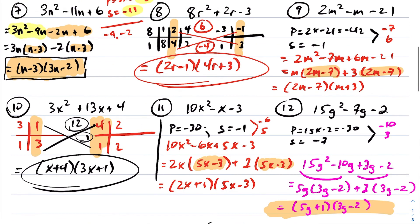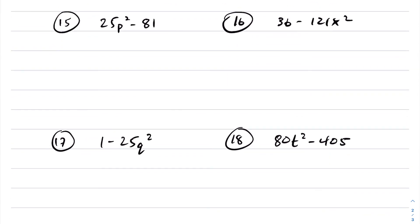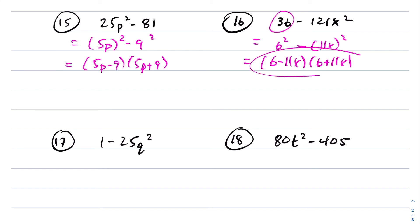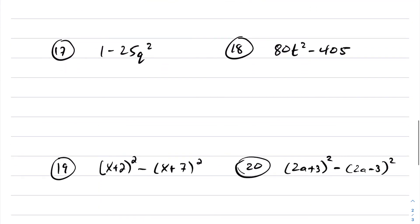Those last eight questions covered decomposition and charting for quadratics with a leading coefficient not equal to 1. Now moving on to difference of squares — you need to express terms as powers of 2. For question 15, we have an expression squared minus another expression squared, which factors into 5p minus 9 times 5p plus 9. Likewise for question 16, represent 36 as 6 squared; since 121x is not yet a perfect square, rewrite as 11x quantity squared, then apply the difference of squares formula. For question 17, this is 1 squared minus 5q quantity squared.